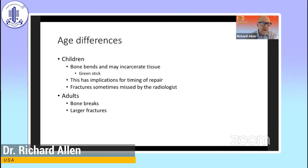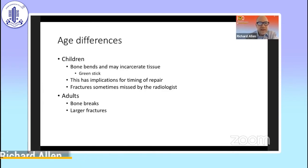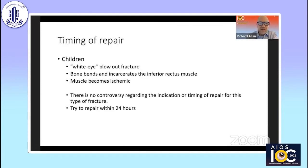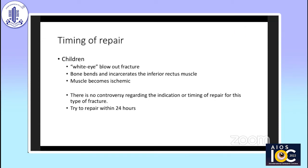Whereas in adults, as we get older, our bone gets brittle, it breaks, and we get larger fractures. In children, we think of this as a white-eyed blowout fracture where the bone bends and incarcerates the tissue, in particular the inferior rectus muscle. If this muscle is not released, the muscle can become ischemic. There is really no controversy regarding the indication or timing of repair for this type of fracture.